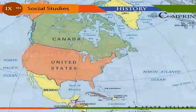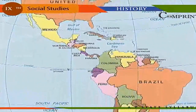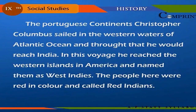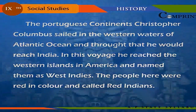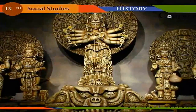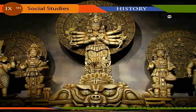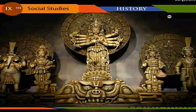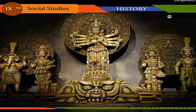Early American Civilization: In the Western Hemisphere, North and South America form the American continent. The Portuguese navigator Christopher Columbus sailed in the western waters of the Atlantic Ocean and, thinking he would reach India, instead reached the western islands of America, naming them the West Indies. The people there were red in color and are called Red Indians. European settlers made many explorations and studied the culture and civilization of the ancient people. There were three important civilizations in ancient America: the Maya civilization, the Aztec civilization, and the Inca civilization.